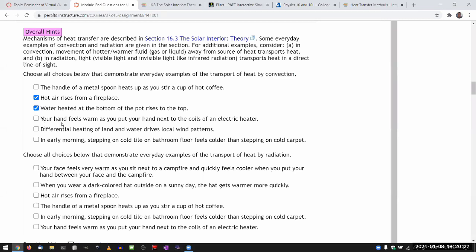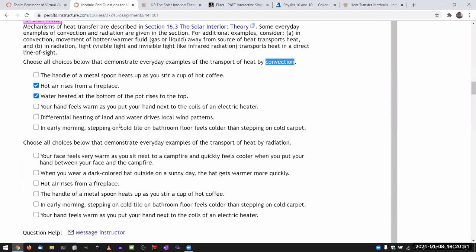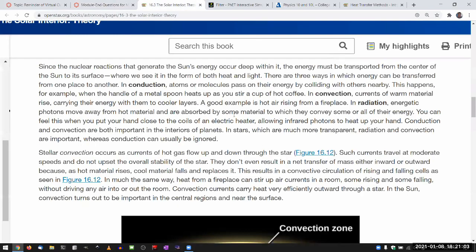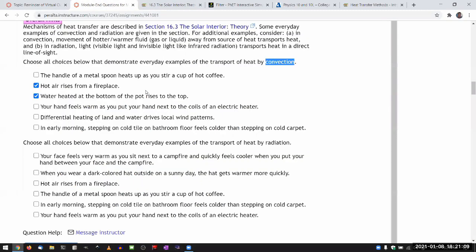Your hand feels warm as you put your hand next to the coils of an electric heater. This is for convection. You can arguably say there could be some convection involved if there's a movement of air from the electric heater to your hand. But the way it's phrased, and because I wrote it, and I think this is actually an example from your textbook, your hand close to the coils of electric heater. That's radiation, not convection. So I'm not going to check that.